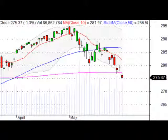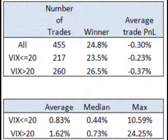The result indicates the opposite. When VIX is greater than 20, the average trade PNL is minus 0.37%, which is higher in absolute value than the average trade PNL for the lower volatility regime — minus 0.23% — and minus 0.3% for all trades combined. This result implies that the mean reversion of the S&P 500 is even stronger when the VIX is high.